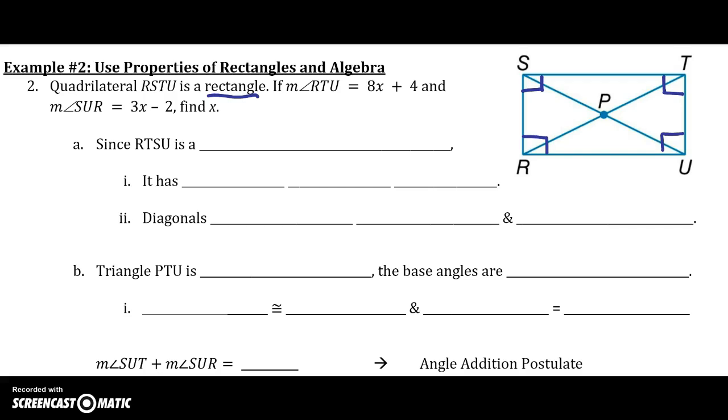All right, so we are given that angle RTU, so this angle RTU, R to T to U, is 8X plus 4.